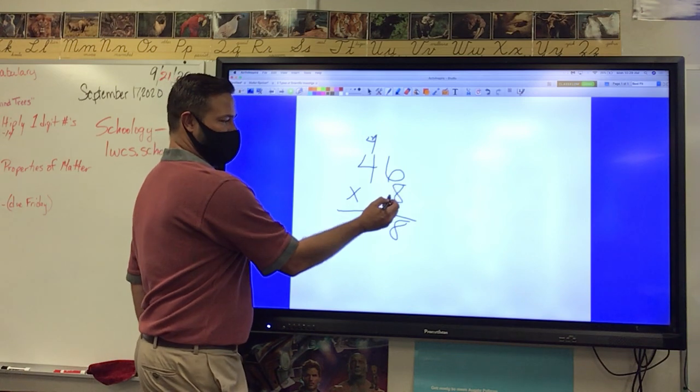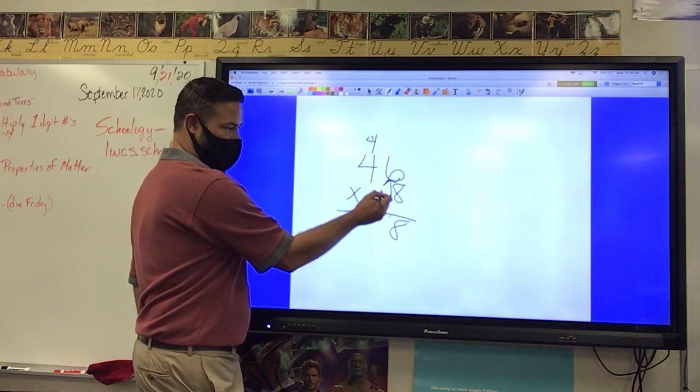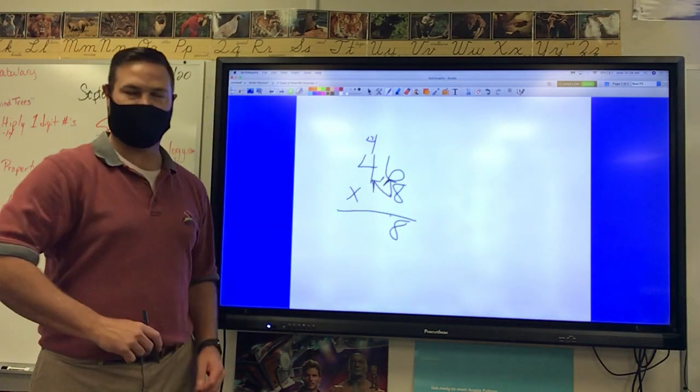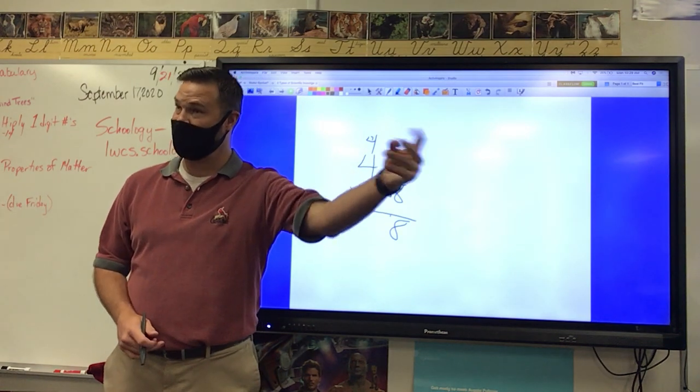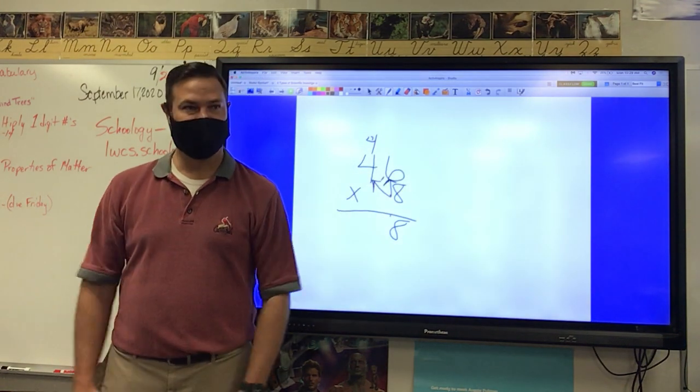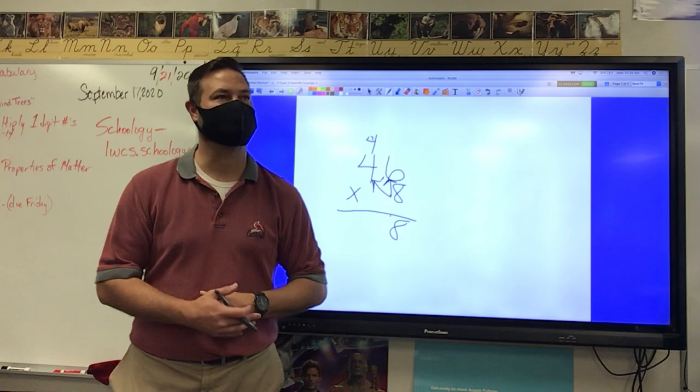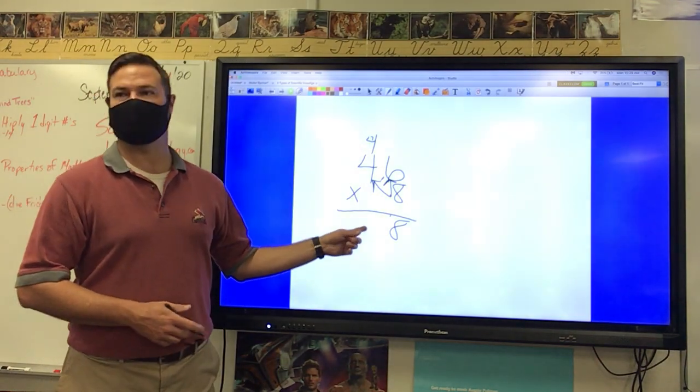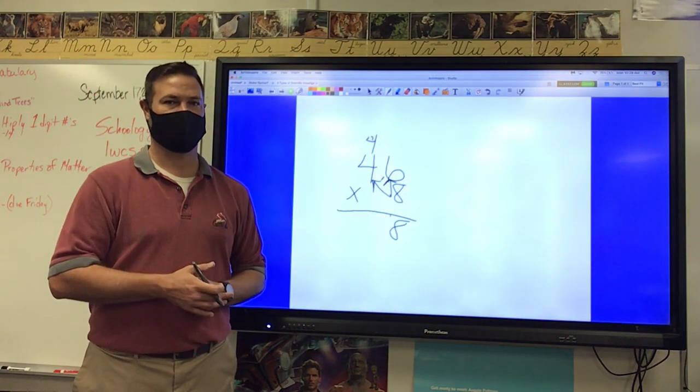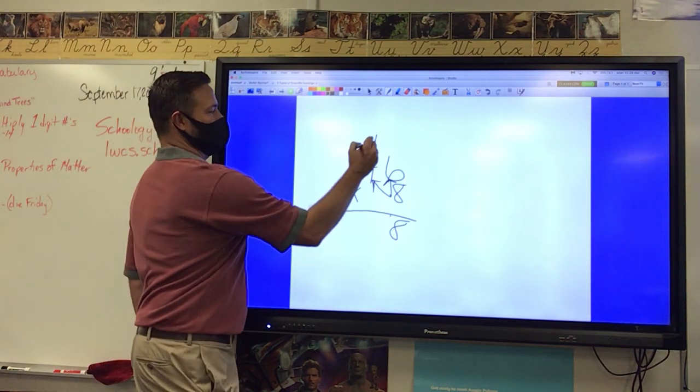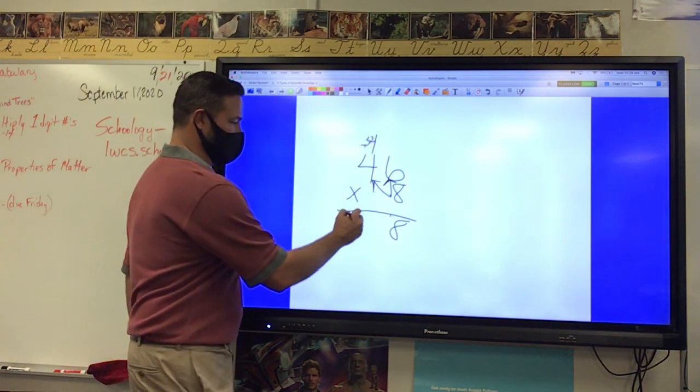4 times 8, right? So you're gonna do 8 times 6 first, and then 8 times 4, okay? 8 times 4 is? How much? 32. Thank you. Is my answer 32? No. What do I have to do? Add this 4. So 32 plus 4 is 36.